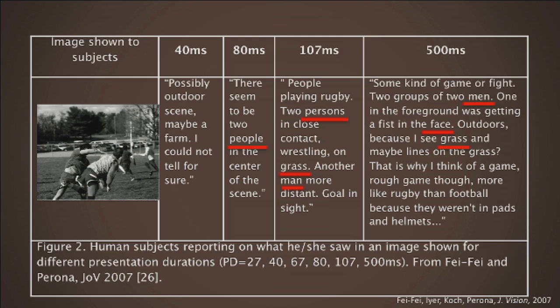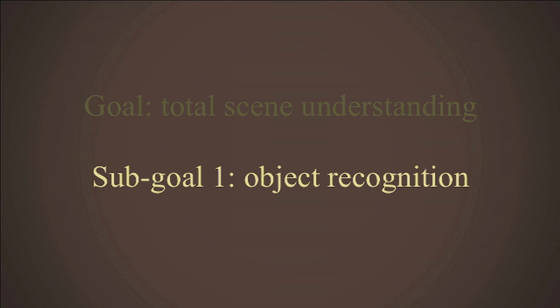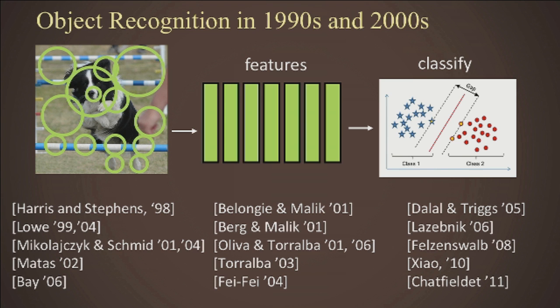With this powerful tool called machine learning, computer vision is starting to tackle some of the most important and fundamental problems. One of the most important is object recognition. If you go back to what humans see in a scene, the building blocks are objects — if we don't see objects, it's very hard to do total scene understanding. The first sub-goal is object recognition. In the early days of machine learning, computers were used to find features and then a machine learning algorithm classified objects.